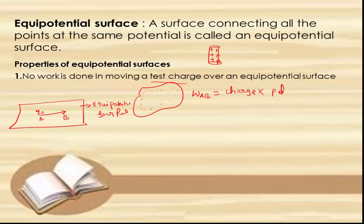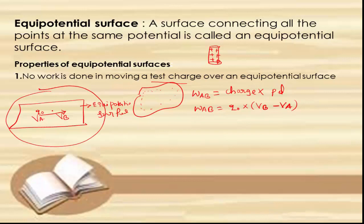The work done from point A to B is equal to the charge q₀ multiplied by the potential difference, which is φ_B minus φ_A — that is, the potential at point B minus the potential at point A. But here the surface is equipotential, meaning it connects all points at the same potential.